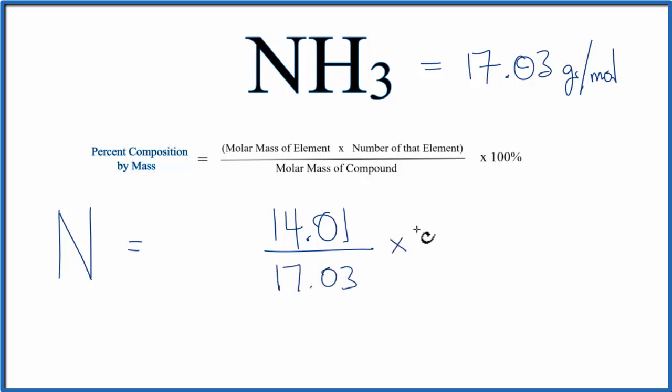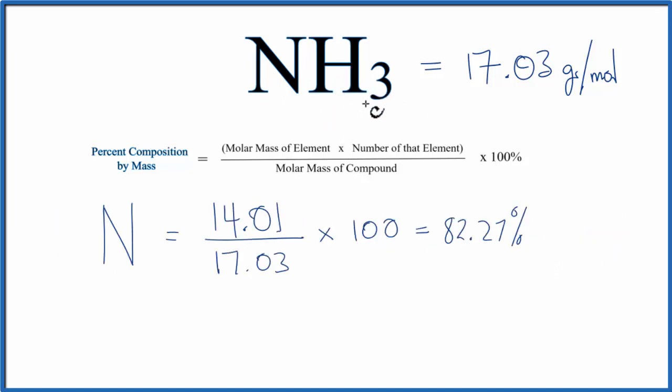We'll multiply this by a hundred and that'll give us the molar mass for the nitrogen in NH3. That's 82.27%. Next let's find the percent composition for the hydrogen in NH3.